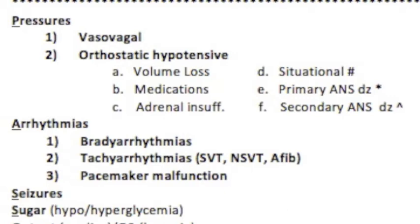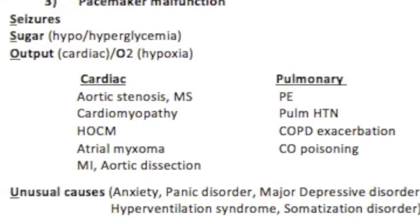A is for Arrhythmias: bradyarrhythmias, tachyarrhythmias including SVTs, NSVT, and AFib, and pacemaker malfunction. S is for Seizures — on the differential but not a cause of syncope per se. The other S is for Sugar — hypo- or hyperglycemia — again on the differential but not necessarily a cause of syncope.